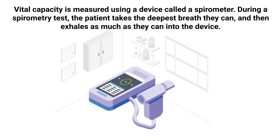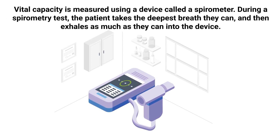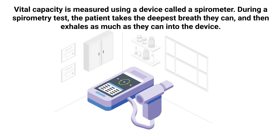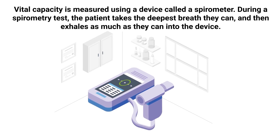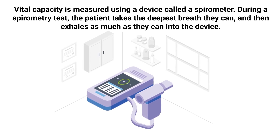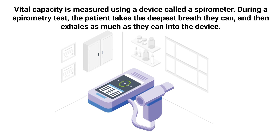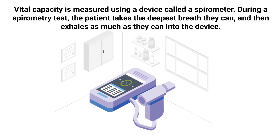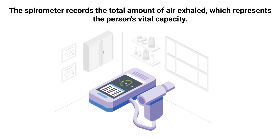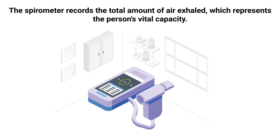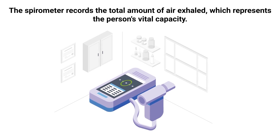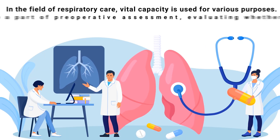Vital capacity is measured using a device called a spirometer. During a spirometry test, the patient takes the deepest breath they can and then exhales as much as they can into the device. The spirometer records the total amount of air exhaled, which represents the person's vital capacity.